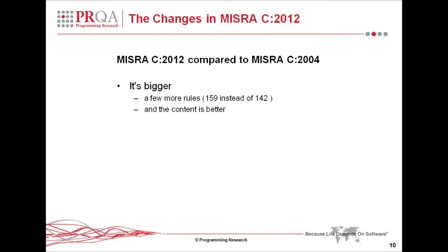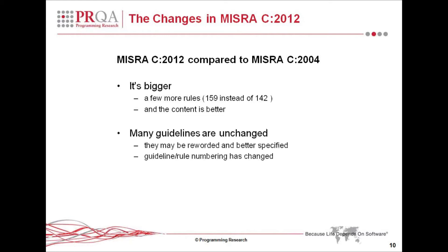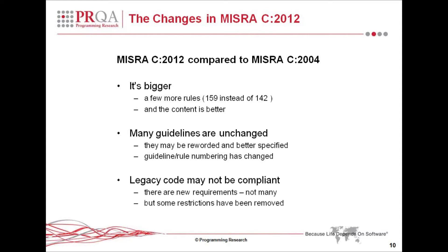The main reason is that quite a lot of work has gone into the content of the rules and the explanation — we will go into that in more detail in a moment. Much of the content of the rules is actually unchanged; many of the guidelines are much as they used to be. They may have been reworded and may be rather better specified now. The numbering of them, unfortunately, will have changed — that was an unavoidable consequence of all the revisions that were done. Much of the structure of the rules is the same, but the rule numbers have changed.